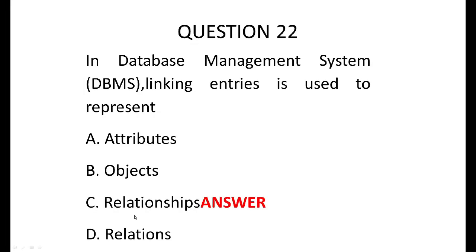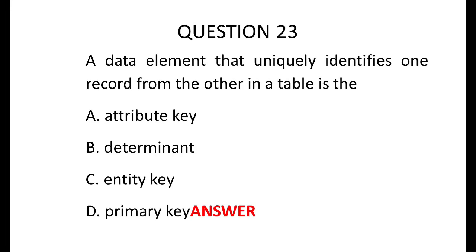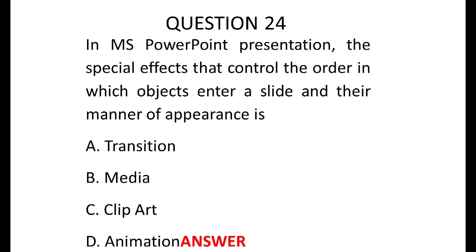Question 22: in a data management system (DBMS), linking entries are used to represent relationships. A data element that uniquely identifies one record from another in a table is called the primary key. In Microsoft PowerPoint, a special effect that controls the order in which objects enter a slide and their manner of appearance is animation. Transition is used to control the way the slide changes, while animation controls the way objects move on a slide — objects can be text, graphics, a table, or anything placed on a slide. Anything you put on a PowerPoint slide is a slide object.